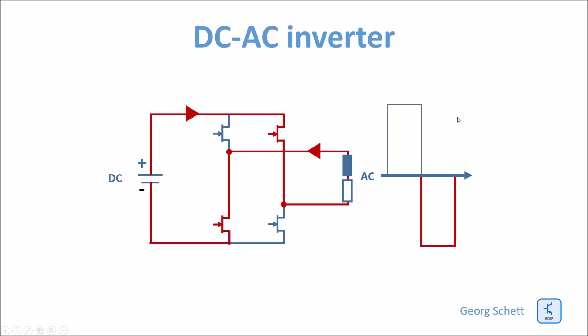For the negative half cycle we switch off these two switches and switch on the other two switches. The shape of the voltage at the load is very rough. It is purely rectangular.